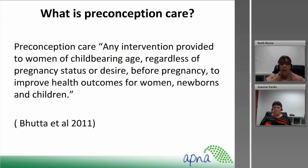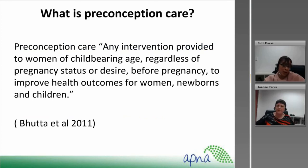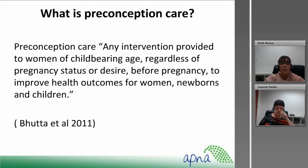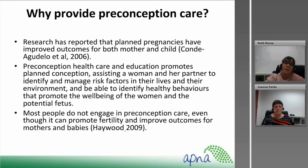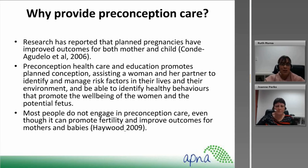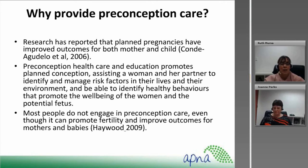Moving on to preconception care — the decision support tool looks at preconception care for both men and women. Preconception care is any intervention provided to a woman of childbearing age, regardless of her pregnancy status or desire for pregnancy, to improve health outcomes for women, newborns and children. Research has reported that planned pregnancies have improved outcomes for both mother and child. Preconception health care and education promotes planned conception, assisting a woman and her partner to identify and manage risk factors and identify healthy behaviours that promote wellbeing of the woman and potential fetus. Most people do not engage in preconception care, even though it can promote fertility and improve outcomes for mothers and babies.